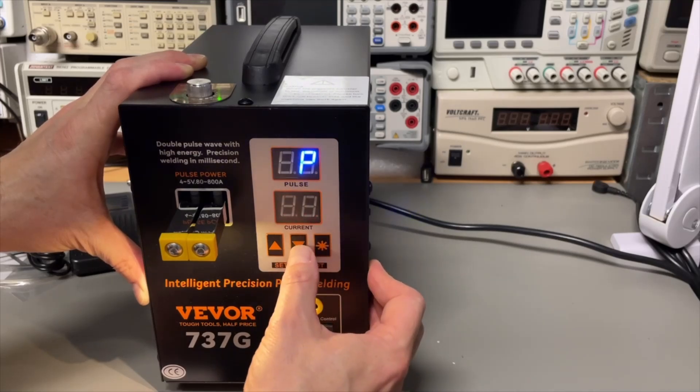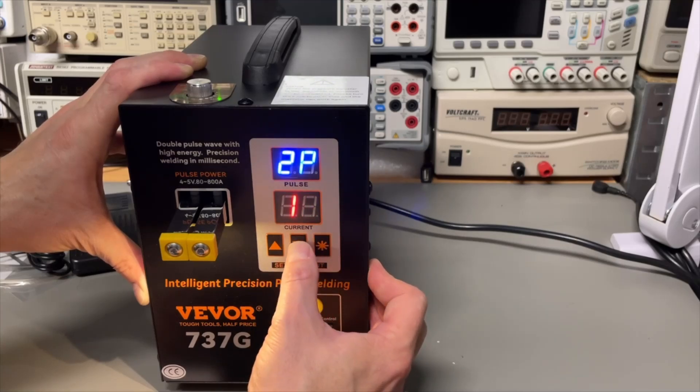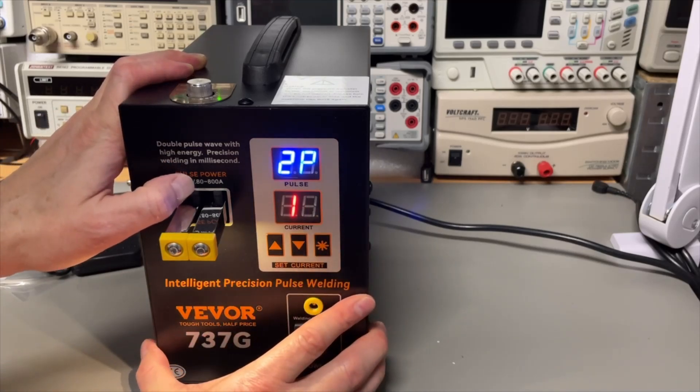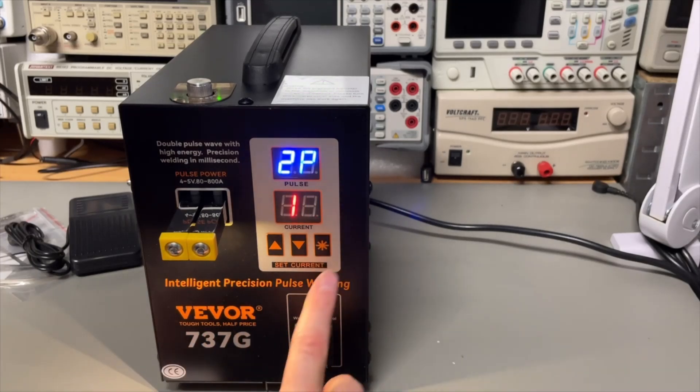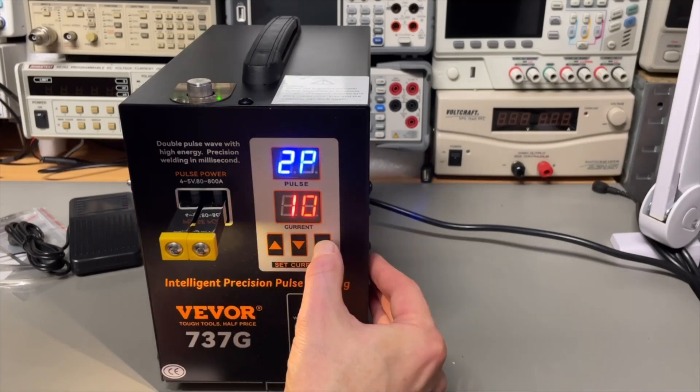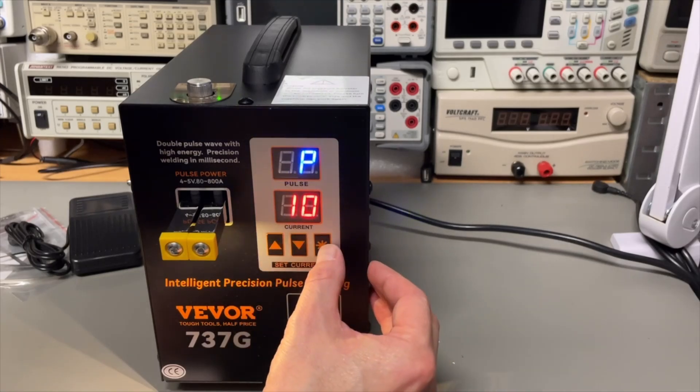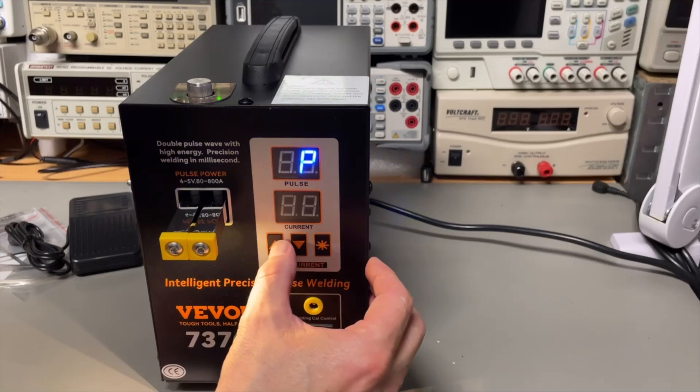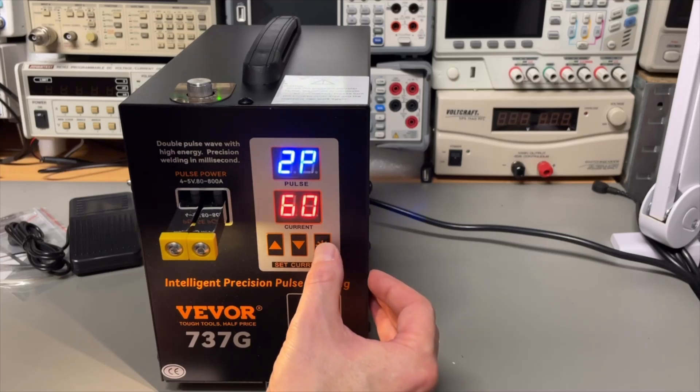So 99 is probably the maximum, which would be 800 amps. How low can we go? One pulse or two pulses. We'll do two pulses. 10 percent is the lowest, so 10% is 80 amps and 99% would be close to 800. This is the button to step from digit to digit. When you confirm it goes. Let me set it to two pulses. I think I'll start with 60, which should be around 500 amps.